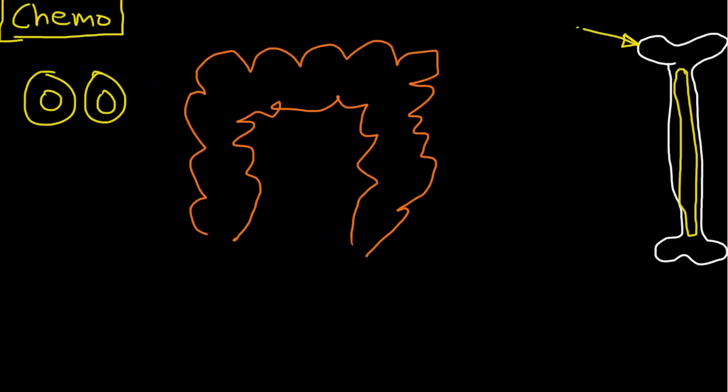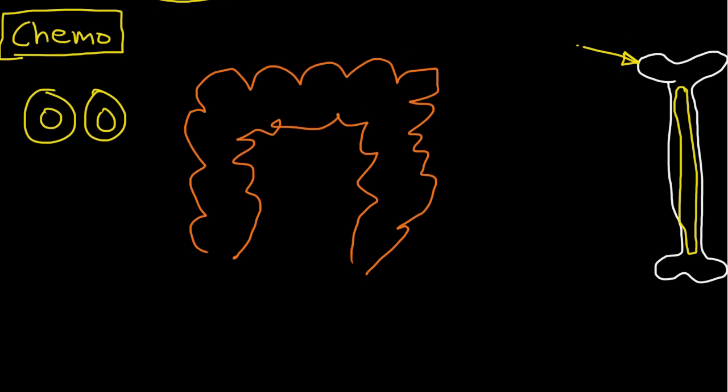We have chemotherapy that is attacking the cells that form the gut mucosa and attacking the cells that are in the bone marrow that are engaged in hematopoiesis. This disrupts the gut mucosa and it disrupts hematopoiesis.